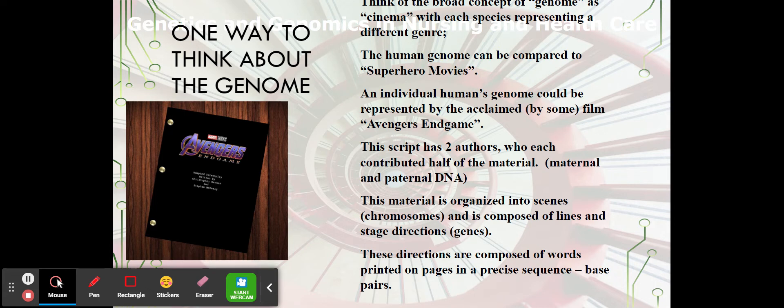But individual movies could be represented by an individual film in that category. For our sake, we'll say that human genome is like this. An individual human's genome is like the script for Endgame. Okay? Movie that some people think is awesome. This script has two authors. Each contributed half of the material. So we have maternal DNA and paternal DNA.